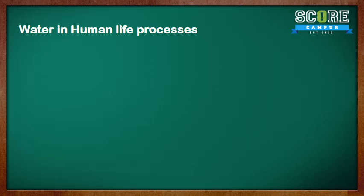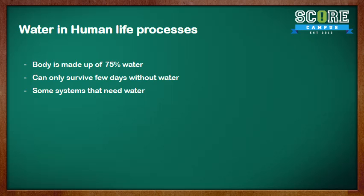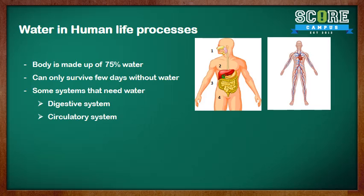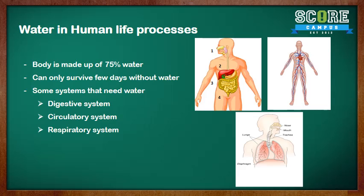Let's talk about water in our human life processes. Our body weight is 75% water. Without water, we can only survive a few days. There are some systems in our body that need water: the digestive system, circulatory system, and respiratory system. We will talk about them in detail over the next few slides.